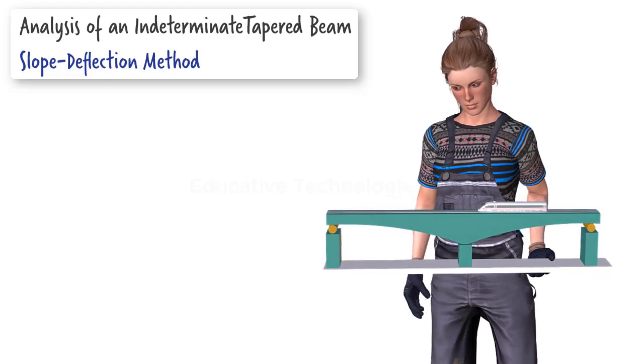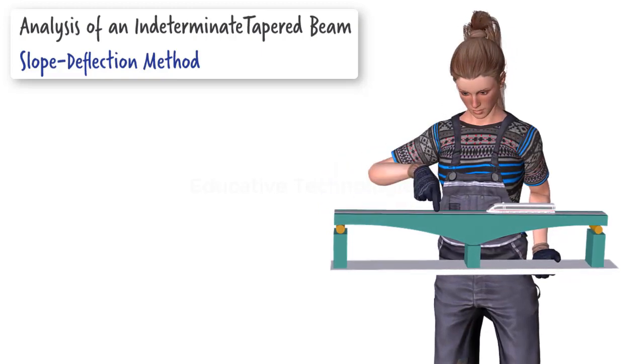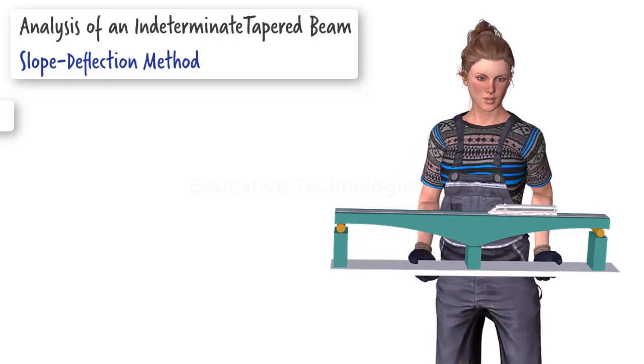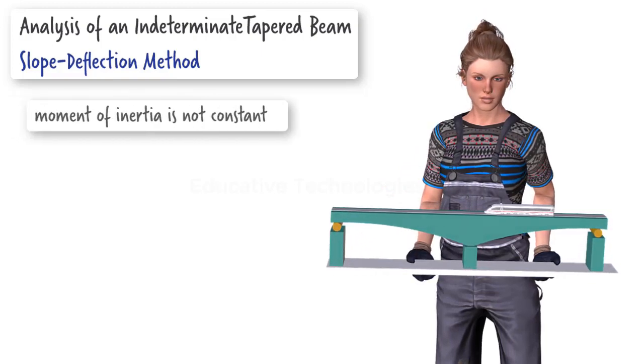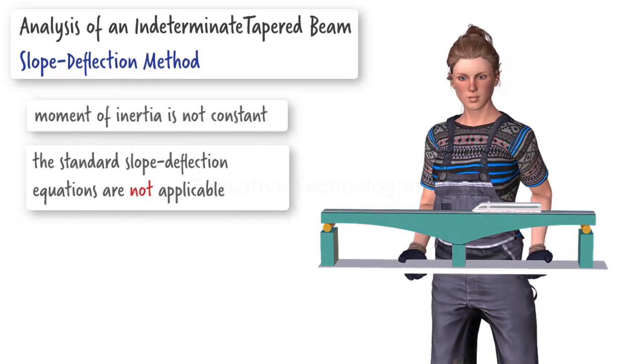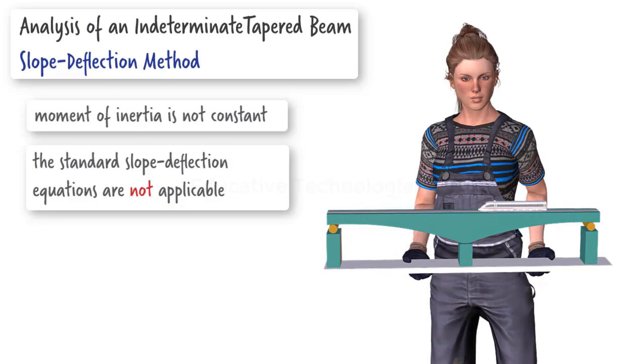As you can see, the beam is shallower at the right end and at the left end, but deeper at the center. This change in geometry results in a varying moment of inertia across the length of the beam which affects the analysis. The standard slope-deflection formulation is not applicable here, since it is based on a constant moment of inertia.